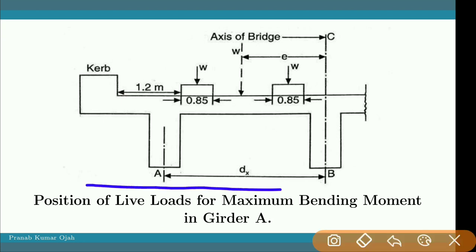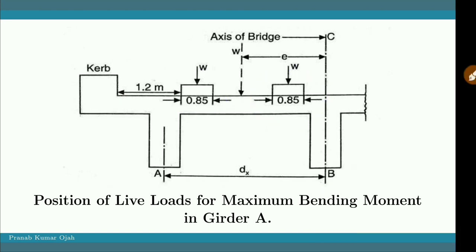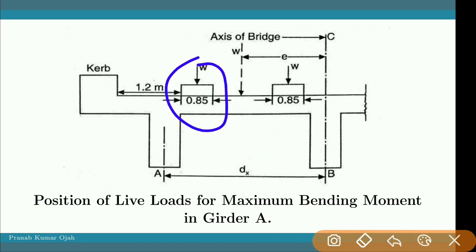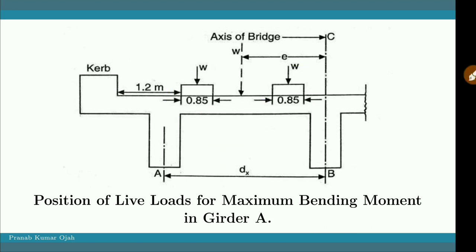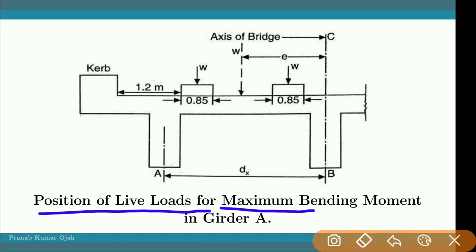We shall understand Corbain's method with one example. Here is one part of the cross section of a T-beam deck slab type of bridge, using IRC class AA track vehicle as an example. One track of the vehicle is placed at a minimum distance of 1.2 meters from the curb, and the other track is placed with respect to this position. This figure shows the position of live loads for maximum bending moment in girder A.